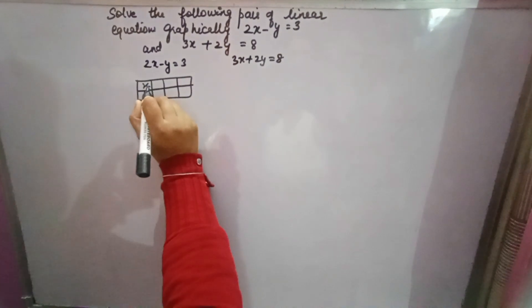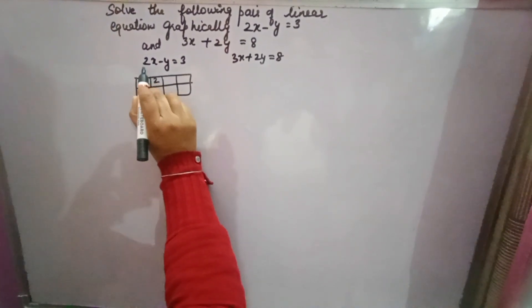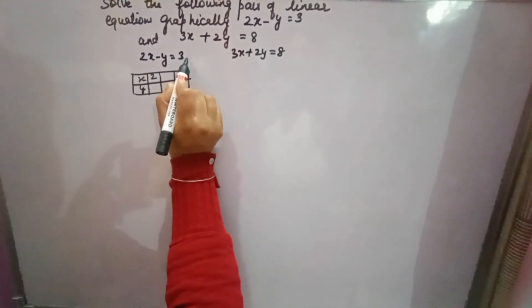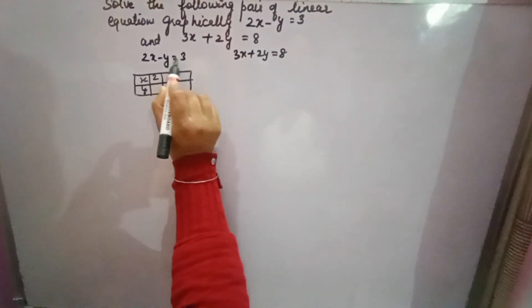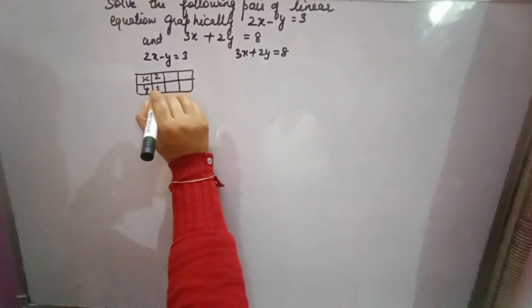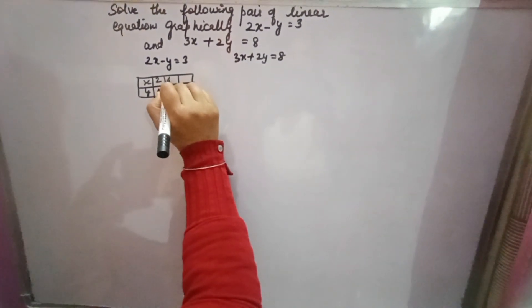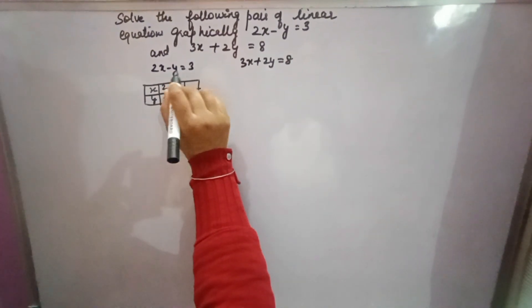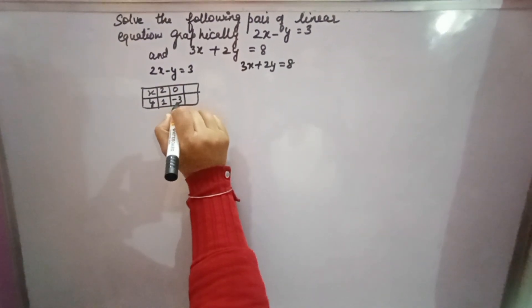We will give different values of x and take different values of y. Now suppose x is 2. 2 times 2 is 4. 4 will go to that side, 3 minus 4 is minus 1. Minus y equals minus 1, so y will come 1. Suppose x is 0. 2 times 0 is 0. Minus y equals 3.